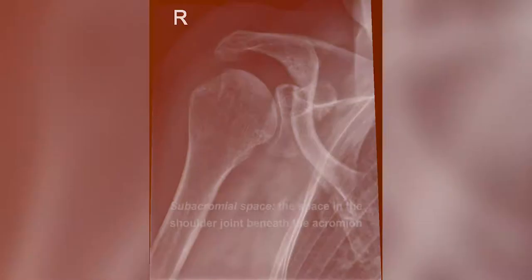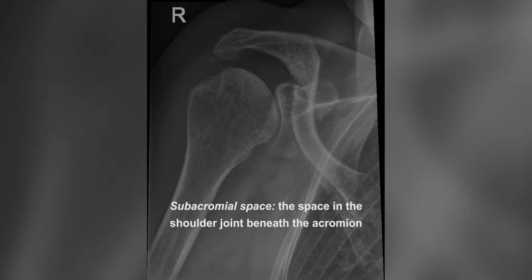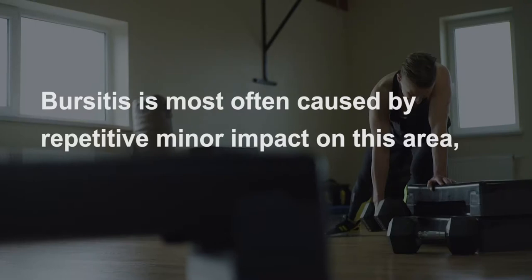The subacromial space is the space in the shoulder joint beneath the acromion, between the acromion and the top surface of the humeral head. Bursitis is most often caused by repetitive, minor impact on the area or from a sudden more serious injury.